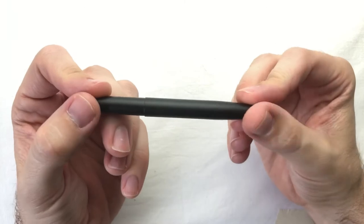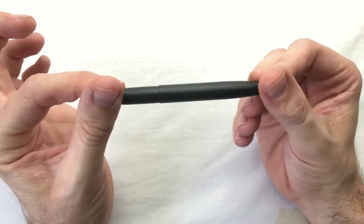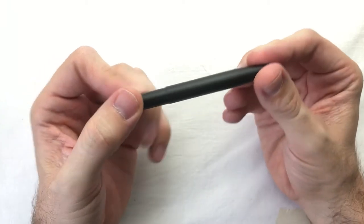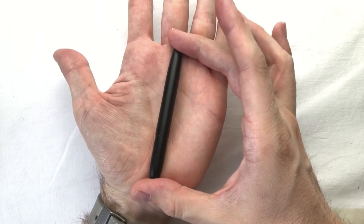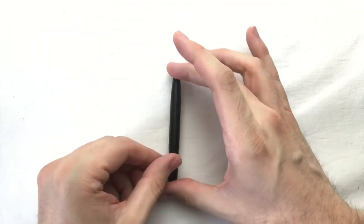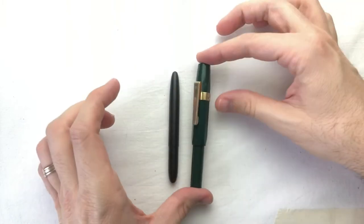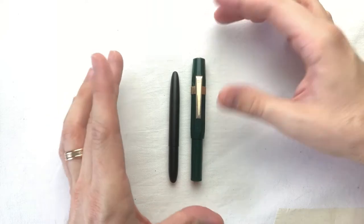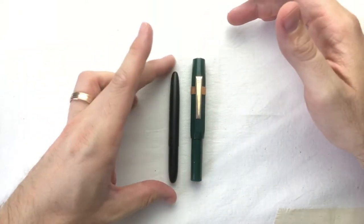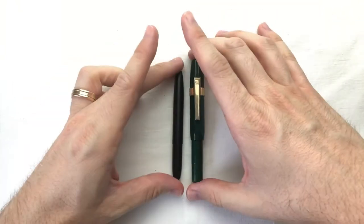Here we go. This is the Fisher Space Pen in its compact size with the cap on. You can see how small it is. Pretty much the size of my hand. And also for reference, here's another pen. This is the Kaweco Sport, which I always thought was a really small pen. But this is even smaller.